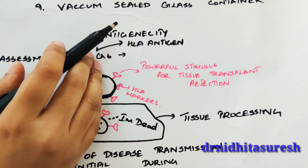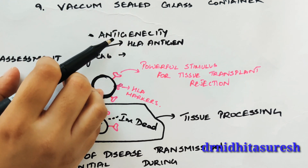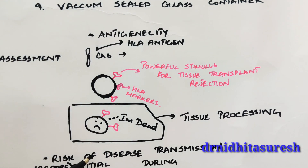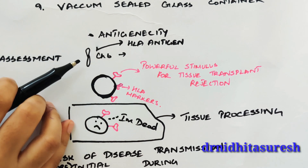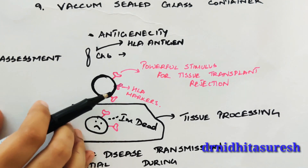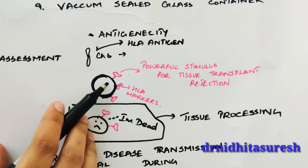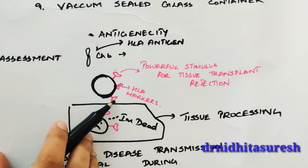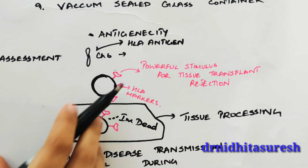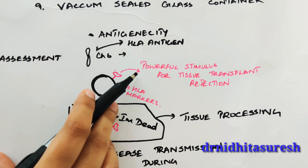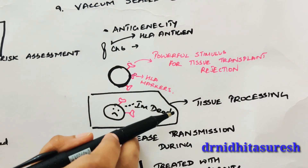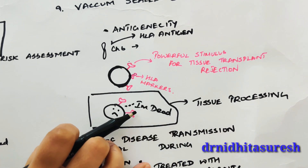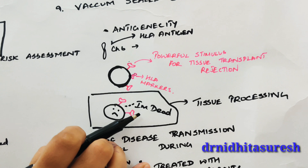The two main concerns with allograft use are antigenicity and the risk of disease transmission. Regarding antigenicity: in humans, chromosome 6 carries the MHC complex which encodes the HLA antigen. Every cell has this HLA antigen on its surface, which acts as a powerful stimulus for tissue transplant rejection. During tissue processing, all cells in the donor bone tissue are destroyed, which decreases the antigenicity.